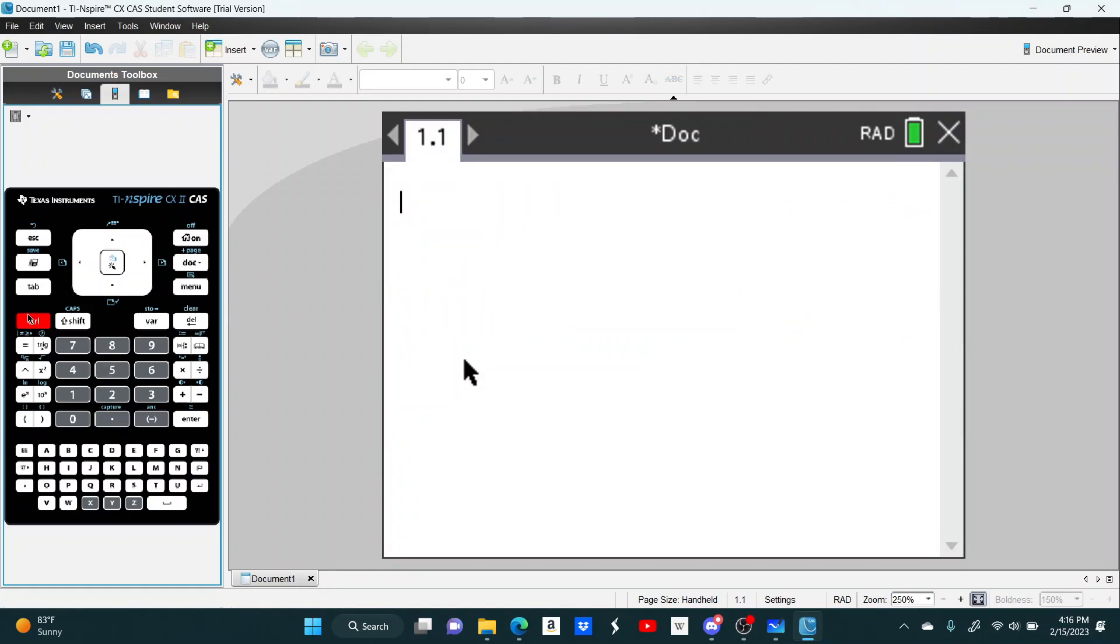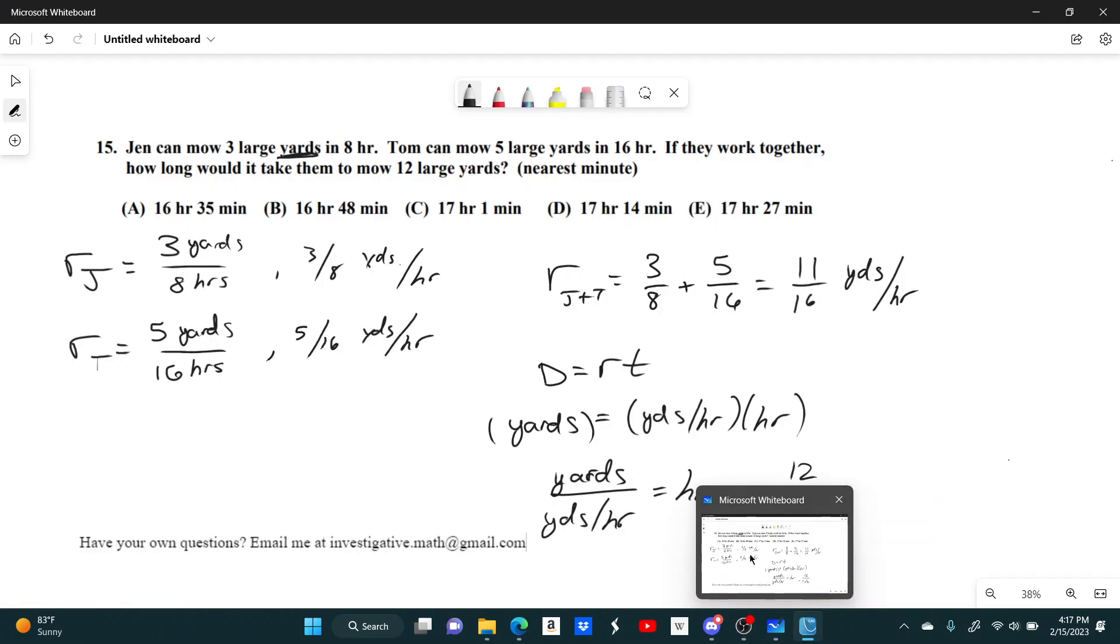So, 12 divided by 11 over 16 gives you 17.45 hours. But I believe it asks for the answer in minutes.